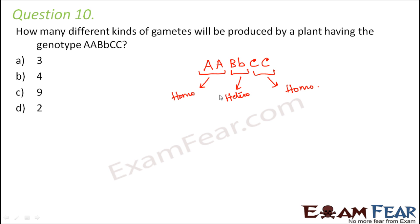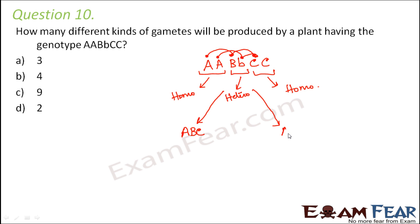So what are the possible gametes that can be formed from this genotype? The first possible gamete would be capital A, capital B, capital C. The second possible gamete will again be capital A because A has only capital A, so the second possibility is capital A, small b, capital C — because A and C both only have the capital form, so you cannot have any further possibilities with A or C.